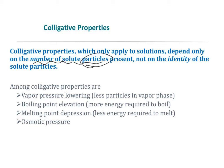The colligative properties we're going to focus on are: vapor pressure lowering, boiling point elevation, melting point depression, and osmotic pressure. If you look at the first two, you can tell that by adding a solute, it takes more energy to boil, which would explain both of those.